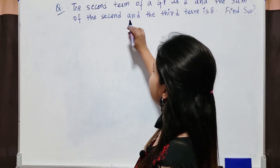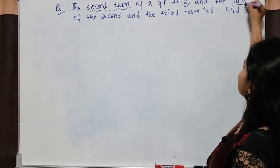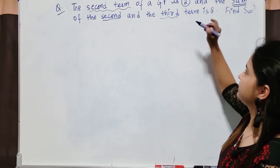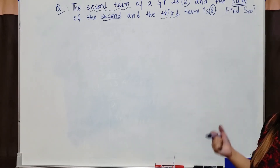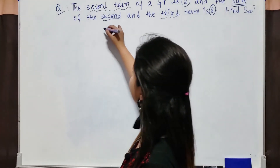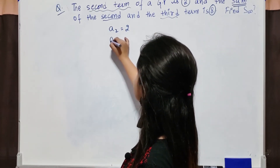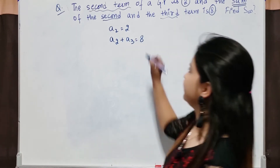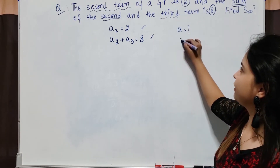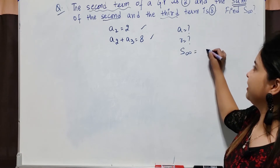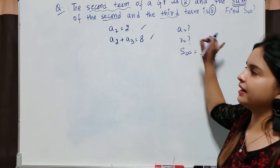Look at the next question. In the next question, the second term of a GP is 2, and the sum of the second and third terms is 8. I have to find the sum to infinity of this GP. First write down all the values given: a₂ = 2 and a₂ + a₃ = 8. Using these two values, I need to find a and r so that I can find S∞ = a over (1 minus r).